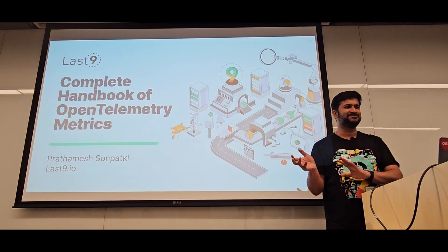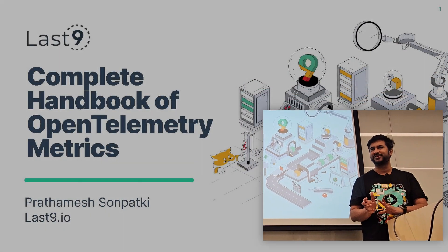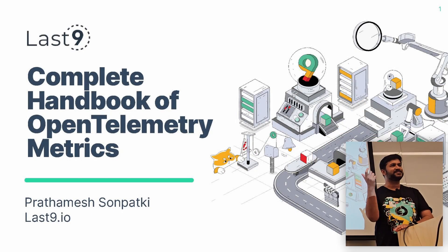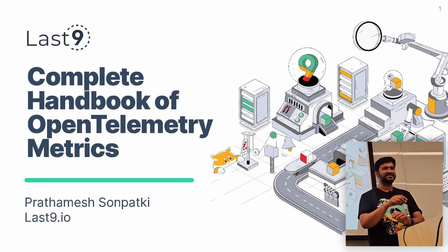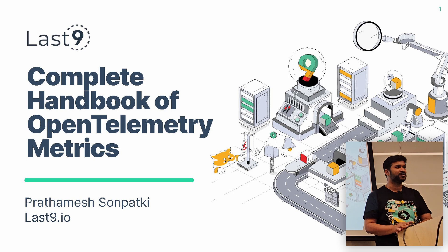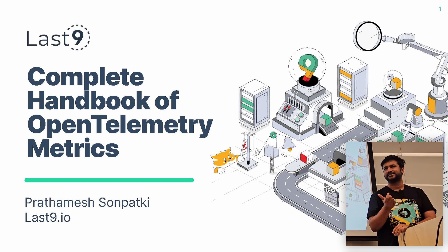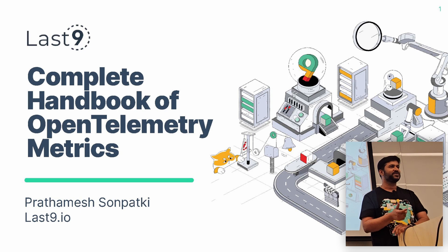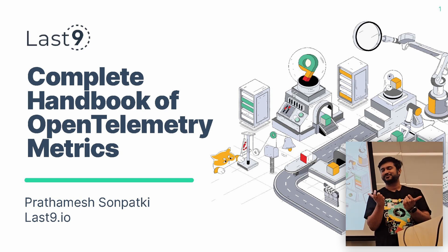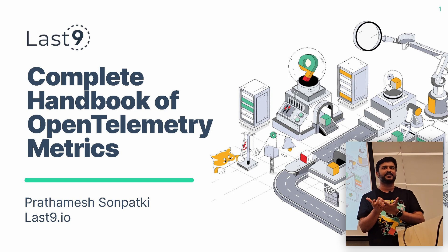I'll talk about what metrics are. Most of us drive two-wheelers, four-wheelers, bicycles, and they have a speedometer which shows us the speed of the vehicle at any point in time. We see the mileage, we see certain other statistics about how our driving is going — those are nothing but metrics. They are basically statistical information about any activity you're doing. Like if you're wearing an Apple Watch, it shows your health statistics — heart rate, how many hours you slept. Those are the metrics, statistics about any activity.